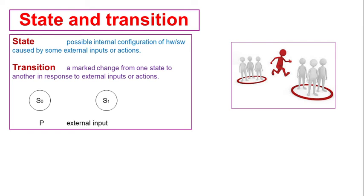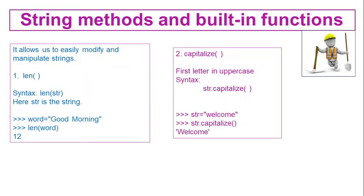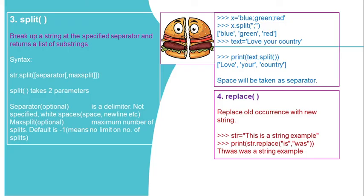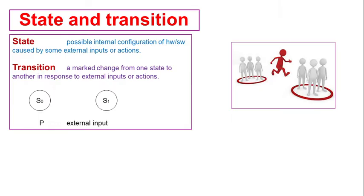So those were the built-in string functions we covered: LEN, capitalize, split, and replace. Now we move to our final topic — state and transition. A state is a possible internal configuration of hardware or software caused by some external input or action. This is the exact definition.